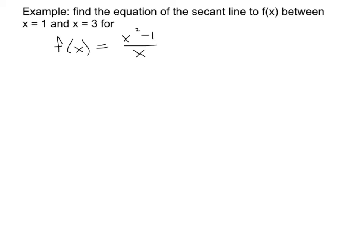So what we did in the previous example was we took these two x coordinates and we basically found the points for the secant line. So the first point I find by doing f of 1. That gives me 1 squared minus 1 over 1. That's 0. And so the point is 1 comma 0.